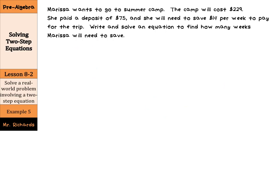Now, for our real-world word problem involving a two-step equation. Marissa wants to go to a summer camp. The camp will cost $229. She paid a deposit of $75. And she will need to save $14 per week to pay for the trip. Write and solve an equation to find how many weeks Marissa will need to save. Well, $14 per week. And we don't know how many weeks we have. That's our unknown. So that's our variable. So we're going to say $14 times the number of weeks plus the initial $75 is going to equal the $229.